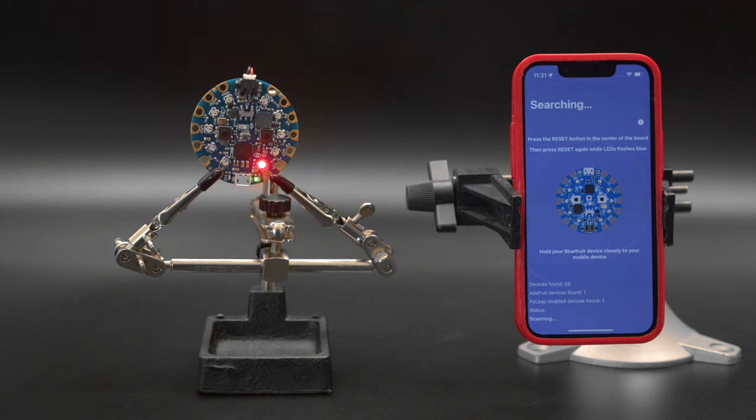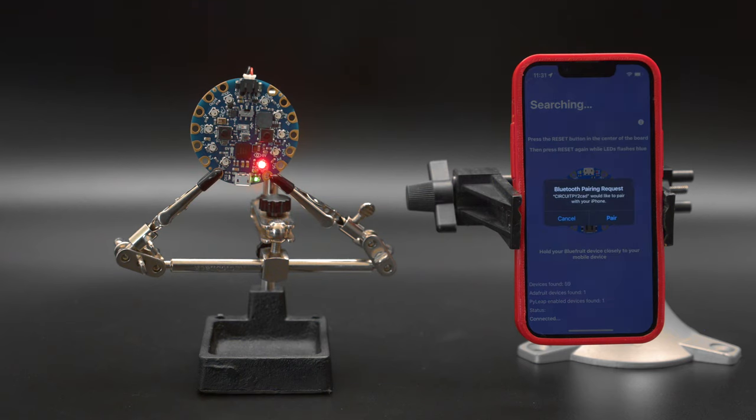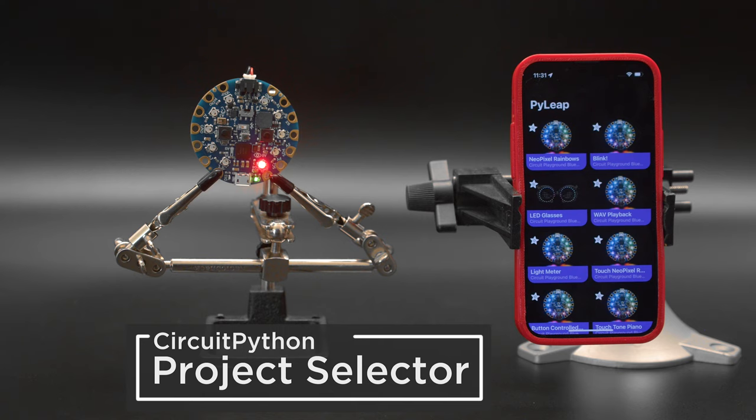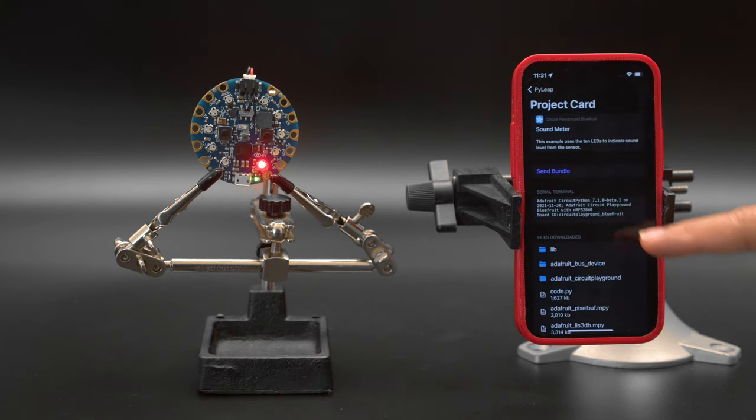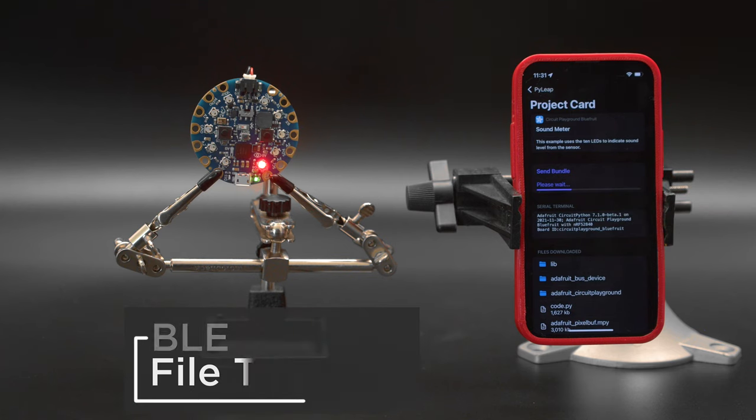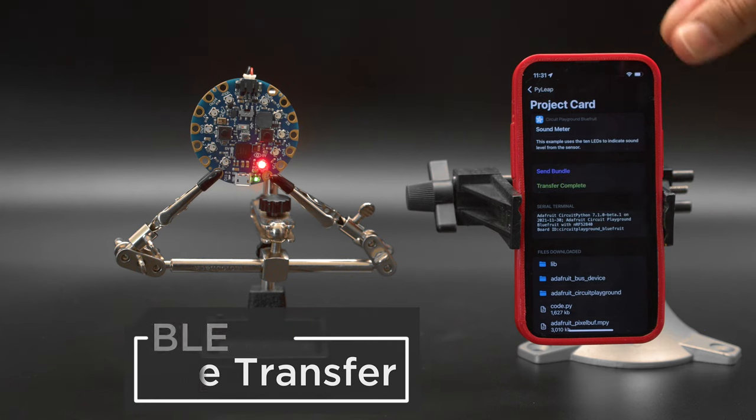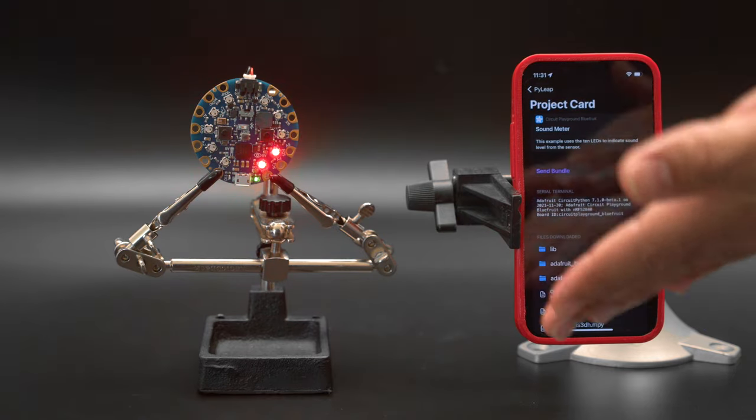You can pair your mobile phone to your BLE-compatible board by following the on-screen instructions. Then, you can browse through the project gallery and select one to upload to your board. Just tap Send Bundle to transfer the code and libraries over Bluetooth. We think this is perfect for educational settings like in the classroom, workshops, or when you're on location.